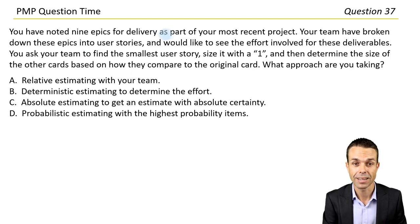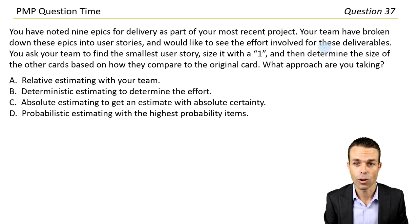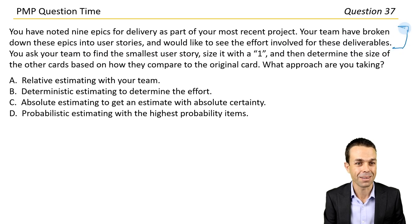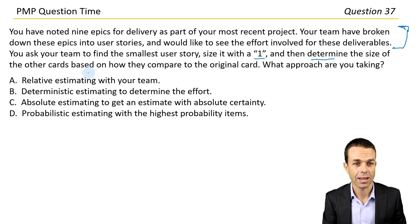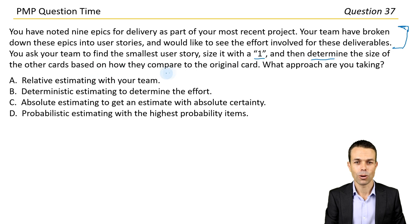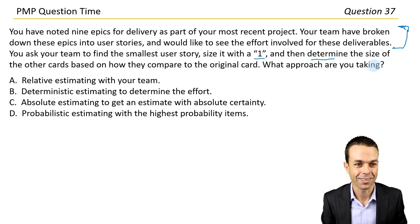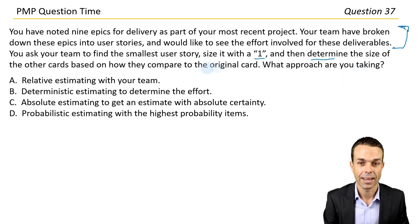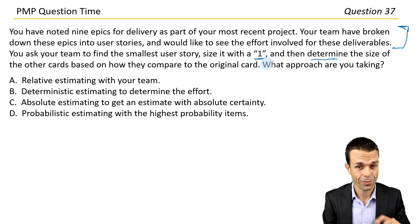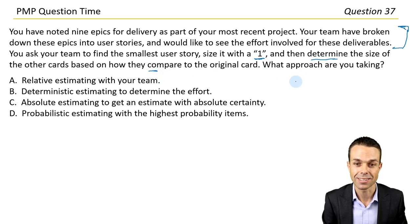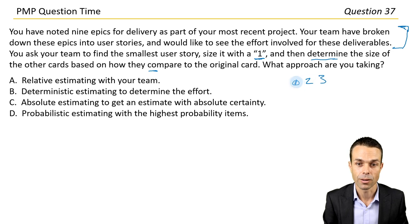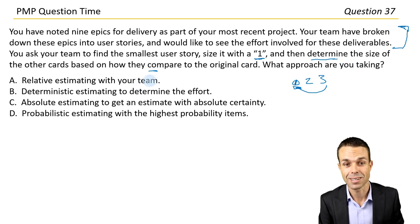You've noted nine epics for delivery as part of your most recent project. Your team have broken down these epics into user stories and would like to see the effort involved for these deliverables. You ask your team to find the smallest user story, size it with a one, and then determine the size of the other cards based on how they compare to the original card. What approach are you taking? We've got one as our baseline — the next one might be a two, the next a three based on how big it is relative to that first one. That's relative estimating with your team — answer A.